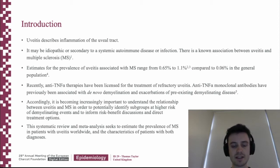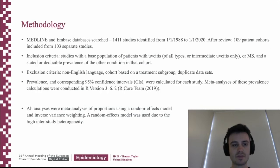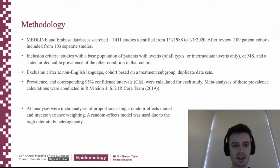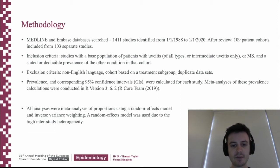This systematic review and meta-analysis seeks to estimate the prevalence of MS in patients with uveitis worldwide and characterise patients with both diagnoses. We searched MEDLINE and EMBASE databases and identified 109 patient cohorts from 103 separate studies. The inclusion and exclusion criteria are listed here. We calculated the prevalence and corresponding 95% confidence intervals for each study and analysed these using R. All analyses were meta-analyses of proportions, and a random effects model was used due to high inter-study heterogeneity.